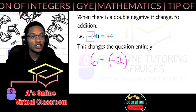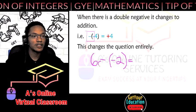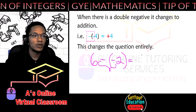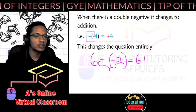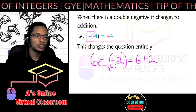This actually changes the question because of the double negative. We get six no longer take away negative but plus two, which is equal to eight.